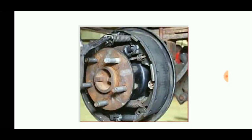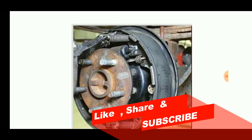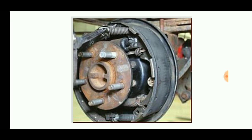Hello viewers, welcome to Engineering Study Materials. Today we are going to discuss the brake drum. It is a braking device which consists of brake linings that exert force on the wheel rim so that the vehicle can be stopped easily. It consists of two braking shoes or linings — that is, primary and secondary.